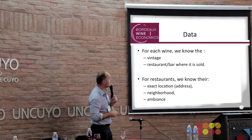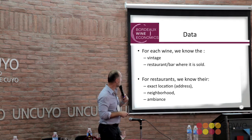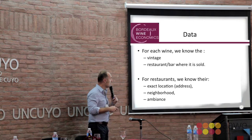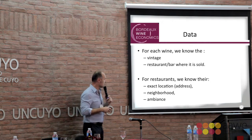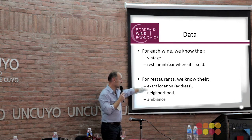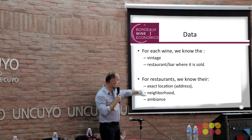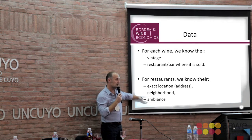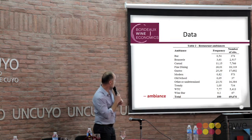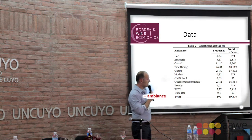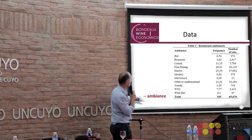For each wine, we know the vintage and the name of the chateau. We also know the restaurant or bar where it is sold, and for each restaurant we know the exact location — we have the address, GPS coordinates, and neighborhood. We also have the ambience of the restaurants, with a classification coming from Wine Services, the startup I mentioned.